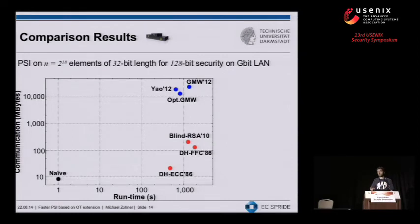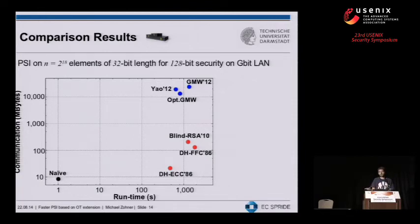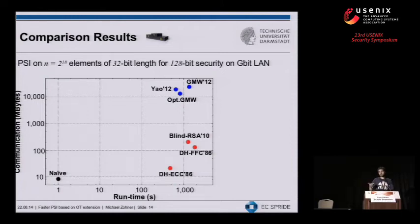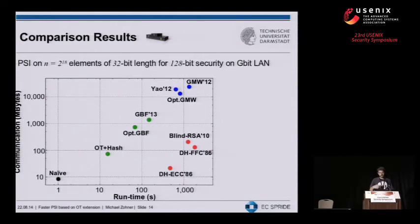For the circuit-based protocols, we used Yao's garbled circuits (similar to NDSS 2012) and the GMW protocol. Yao's garbled circuits outperforms the naive GMW protocol. Our optimization lowered GMW's communication below that of Yao's garbled circuits, but in terms of runtime Yao's garbled circuits is still far better. Notably, these protocols are about two orders of magnitude worse than the public key-based protocols in communication. Finally, for OT-based protocols, we see the garbled Bloom filter protocol from 2013, our optimized version, and our newly introduced protocol, which improves upon both.